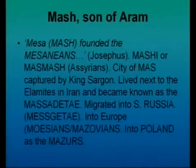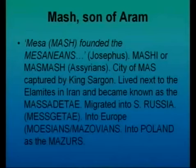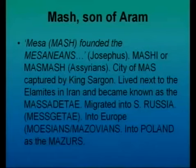Mash, the son of Aram. Josephus says he was the founder of the Massanians. They were known as the Mashi or the Mass Mash by the Assyrians. The city of Mass was captured by King Sargon. They lived next to the Elamites in Iran and became known as the Massadetai. They migrated into South Russia, went into Europe, and eventually into Poland, where they were known as the Mazurs.